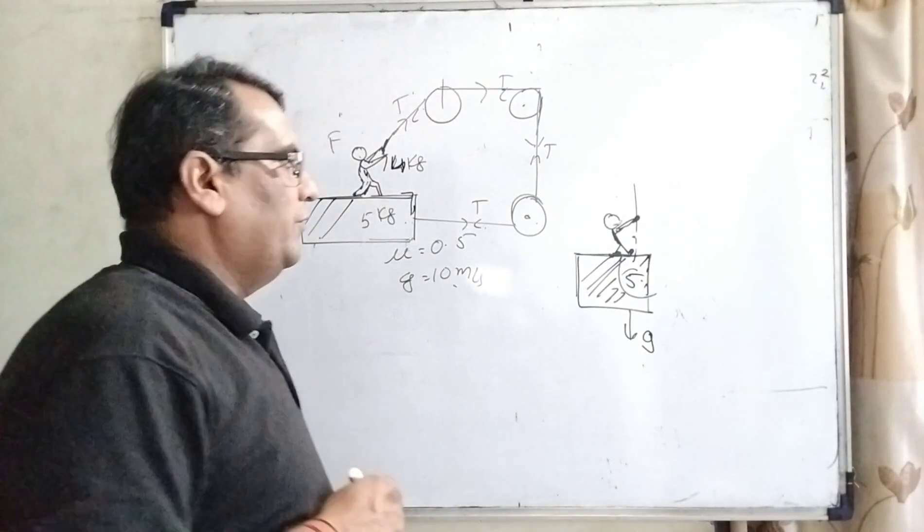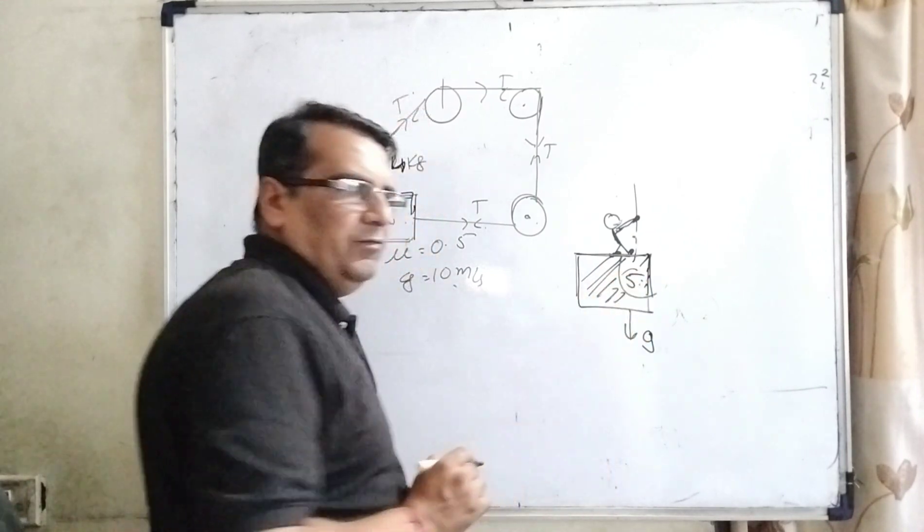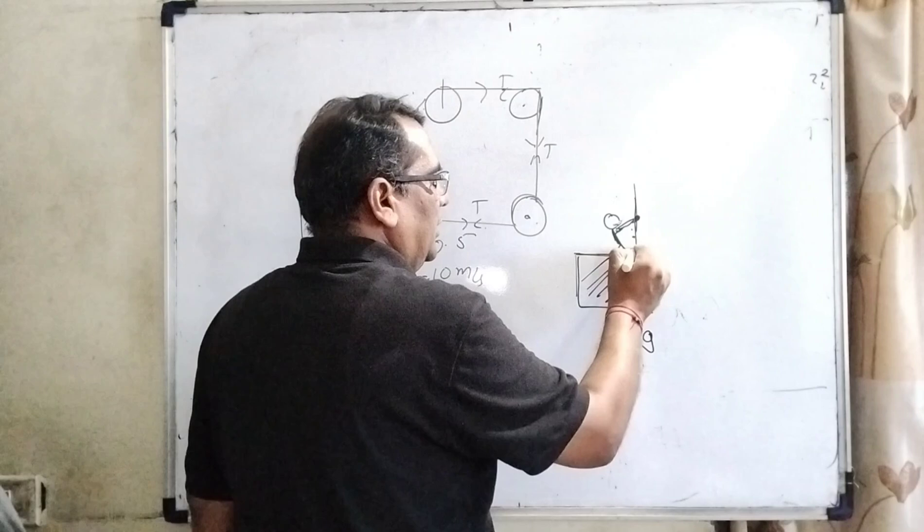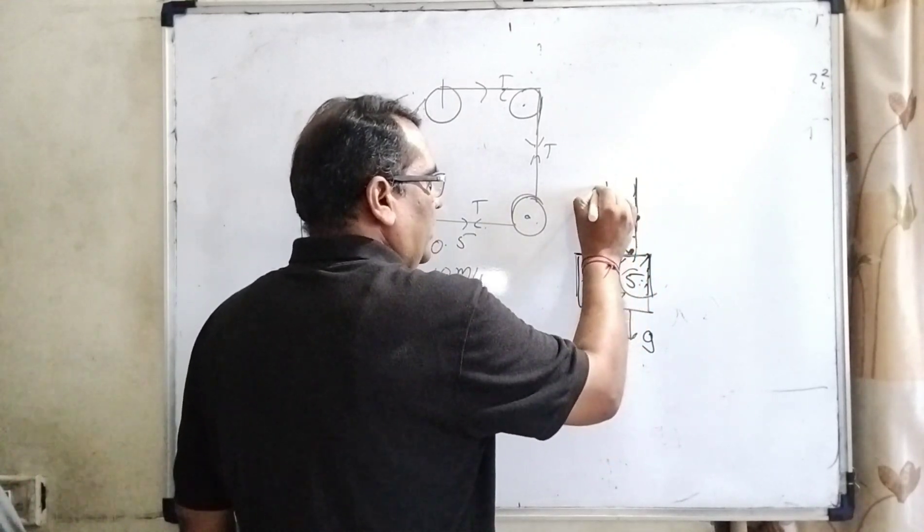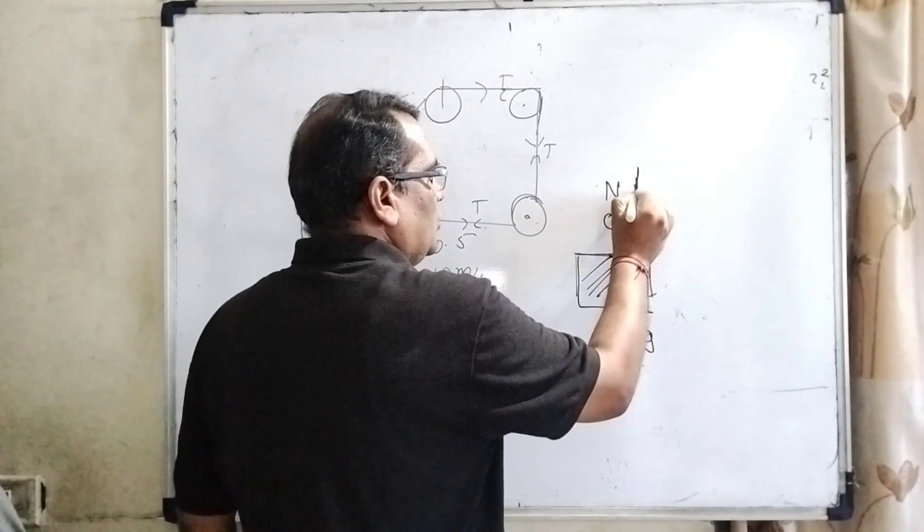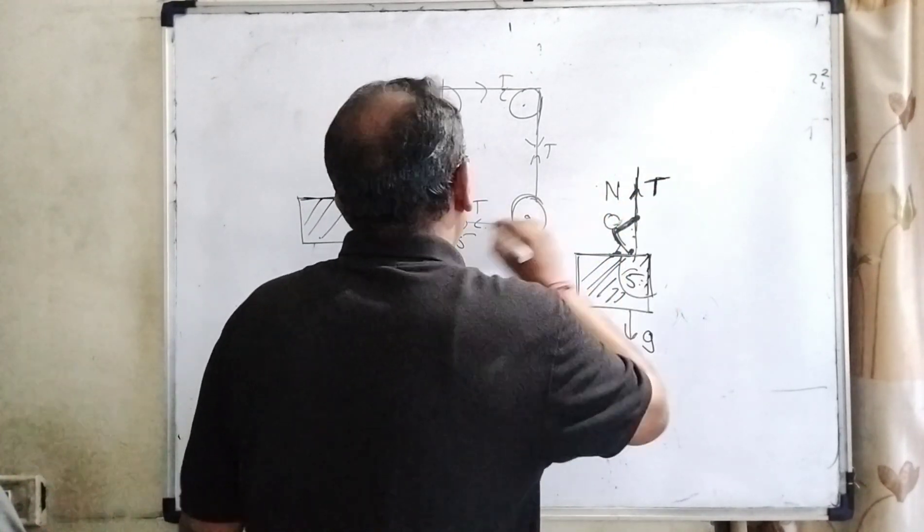Now according to the free body diagram, here the boy is standing on this wooden piece and its weight is 5 kilogram, and the weight of this boy is 4 kilogram. Here the normal force is acting upward direction, and this boy is also applying some force, and tension force is also in the direction of upward.